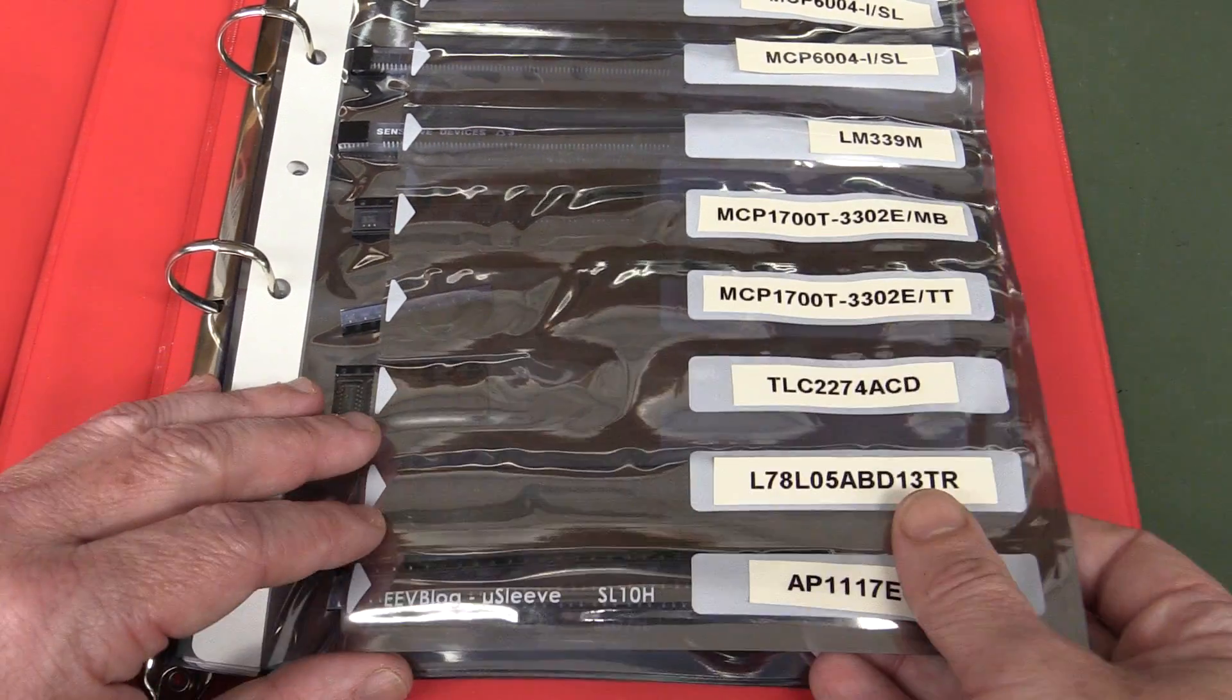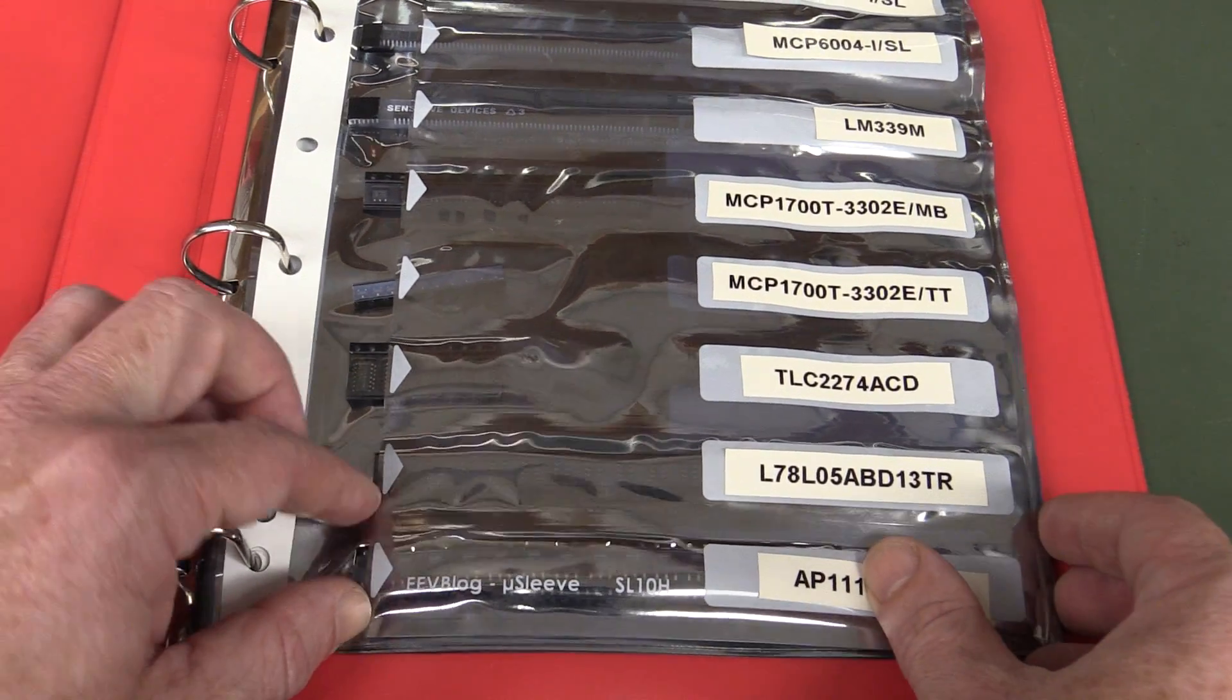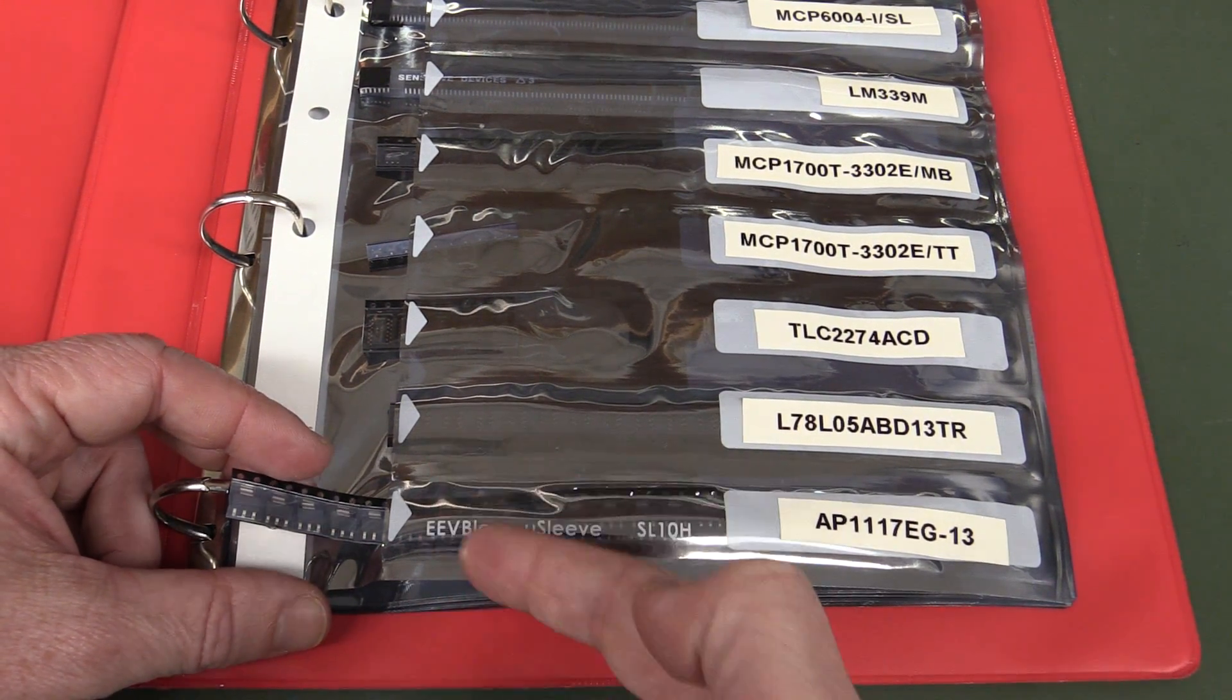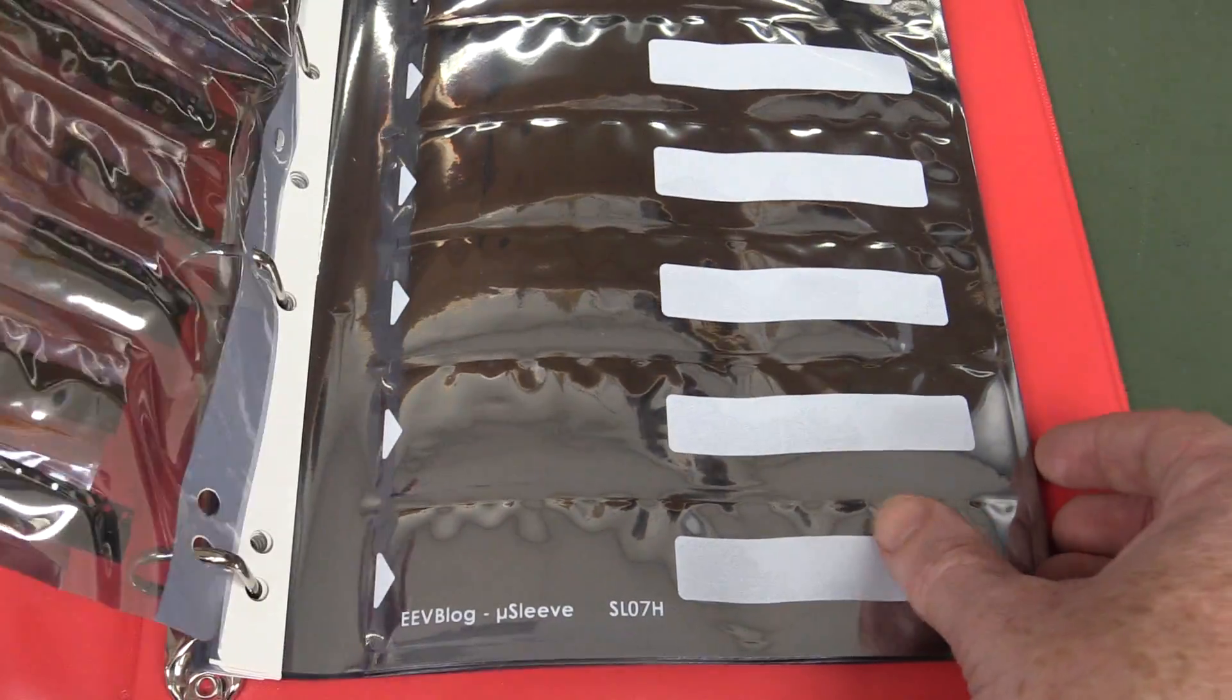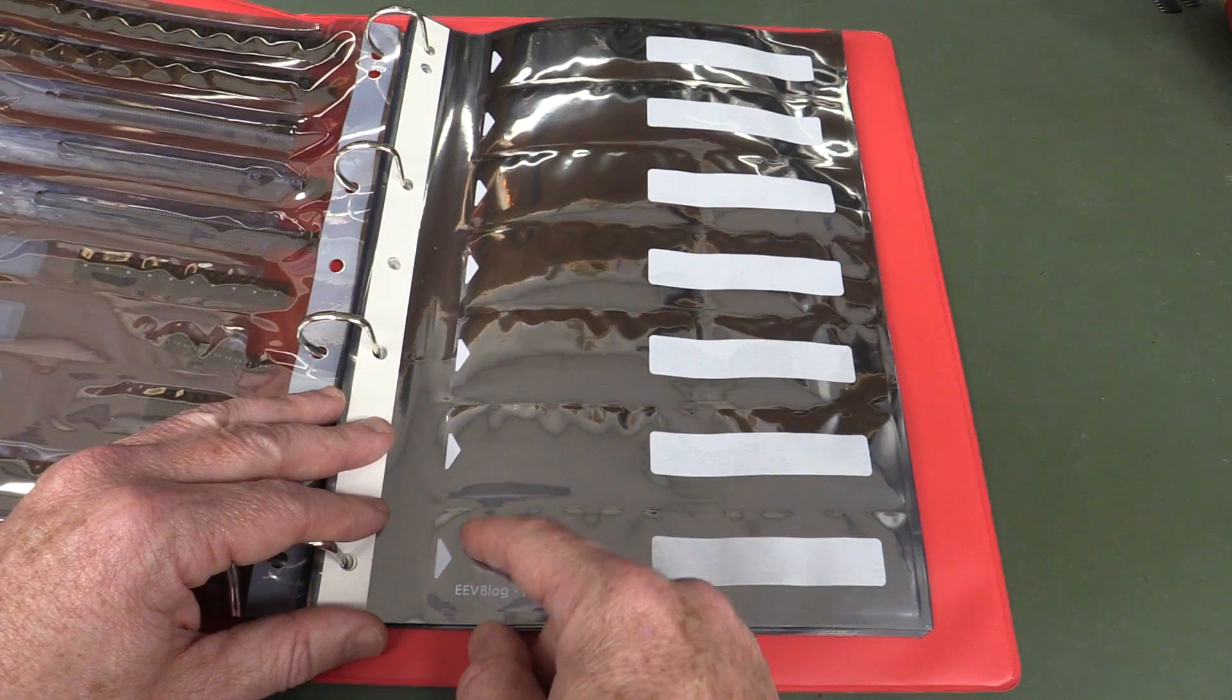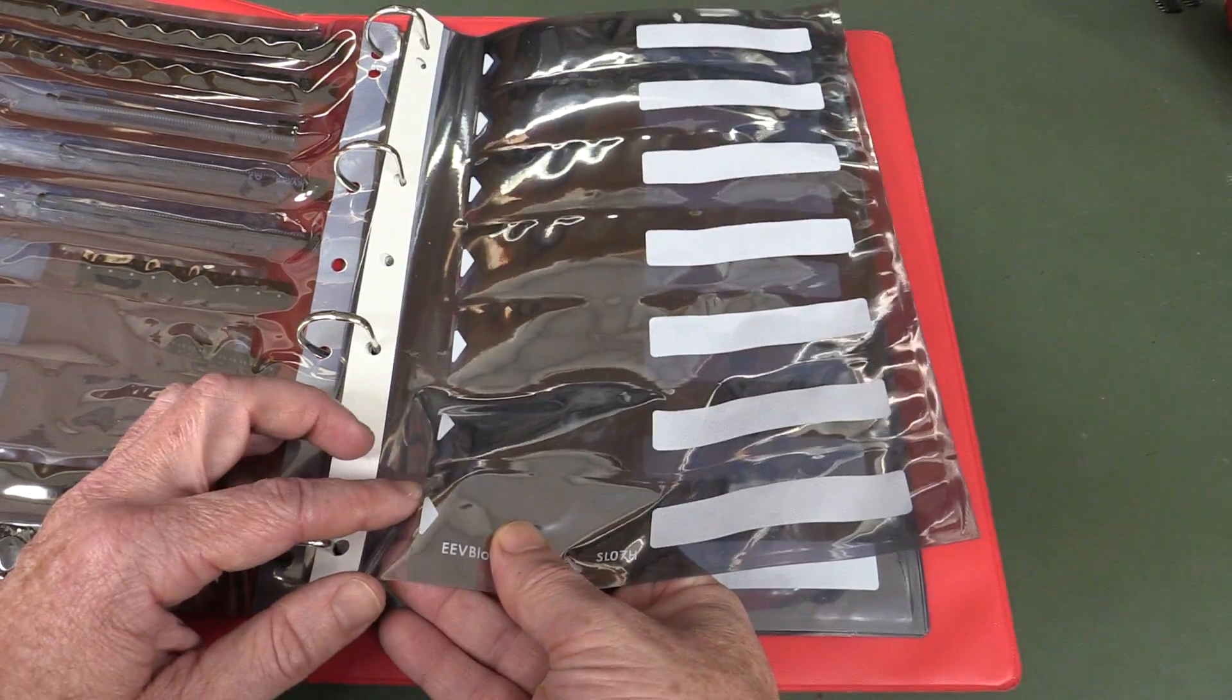And the reason that I've got two sizes is this one here, the SL10H, is designed to support up to standard tape sizes up to 16 millimeters in width: 8, 12, 16 millimeters. And the other one is just a slightly larger one, so you get 7 of those per sheet, as opposed to 10, and that's designed for up to 24 or 32 millimeter tape sizes, just larger ones.